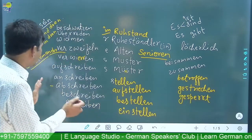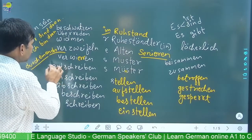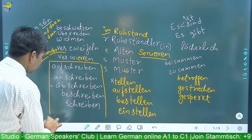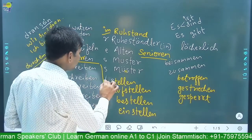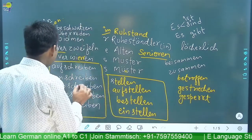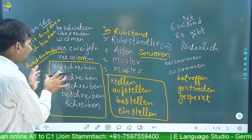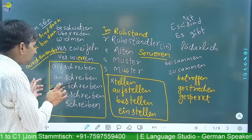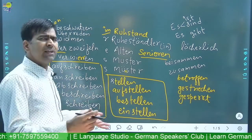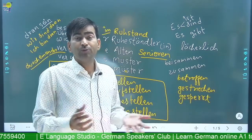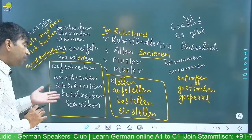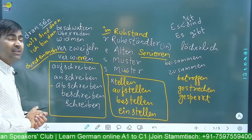There are some similar verbs — dikhne mein similar lagti hain. These are the verbs we have just written: aufschreiben, anschreiben, abschreiben, beschreiben, und schreiben. So schreiben is to write — ich schreibe eine Prüfung, sie müssen auch Prüfungen schreiben. Schreiben is to write. Beschreiben is to describe.